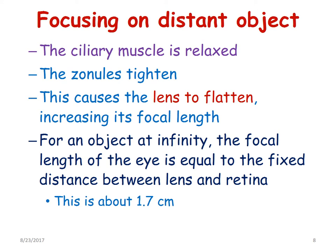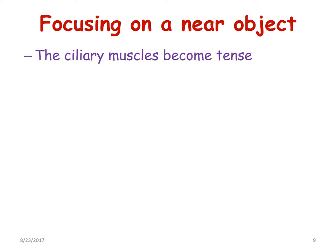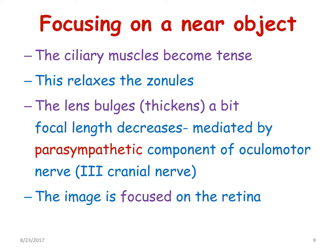When focusing on a near object, the ciliary muscles become tense, which relaxes the zonules, and the lens bulges — that is, it thickens — and the focal length decreases. This is mediated by the parasympathetic component of the oculomotor nerve, or the third cranial nerve, and thus the image is focused on the retina.